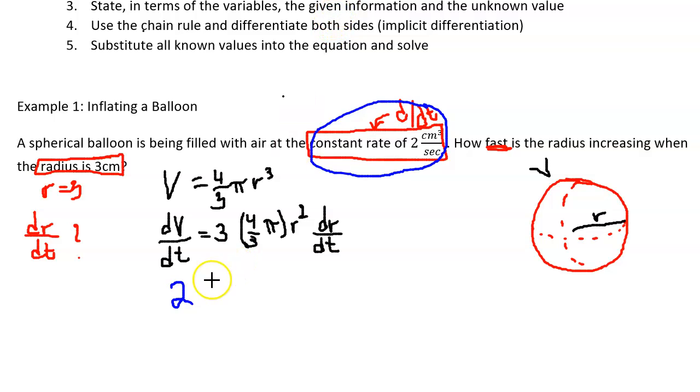Then we've got this which is going to simplify down to being 4 pi r squared where r is three. And then dr/dt is also a variable but that's what we're solving for and so we're going to let it be a variable.